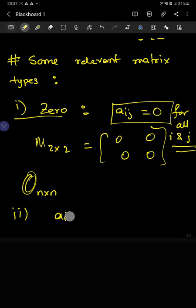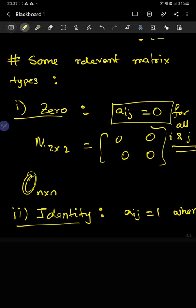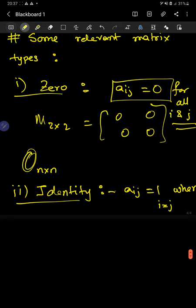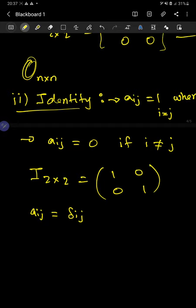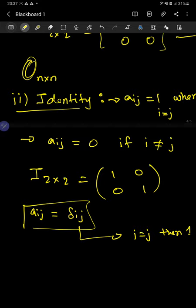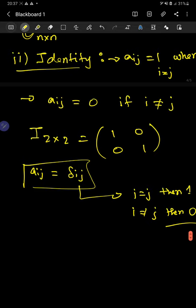Another matrix is the identity matrix, which corresponds to aij equal to one when i equals j — that is, the diagonal elements — and aij equal to zero if i is not equal to j. So you only have the diagonal entries. You can also write this using the Kronecker delta, where delta ij equals one if i equals j and zero if i not equal to j.